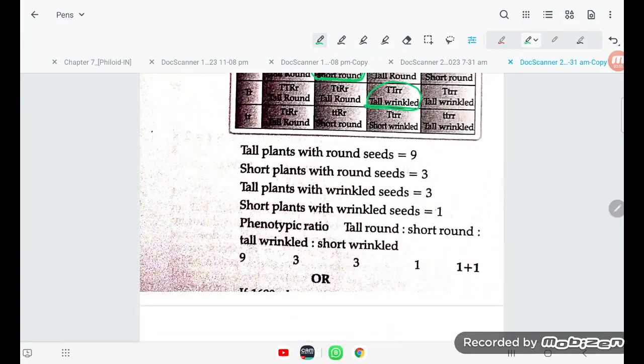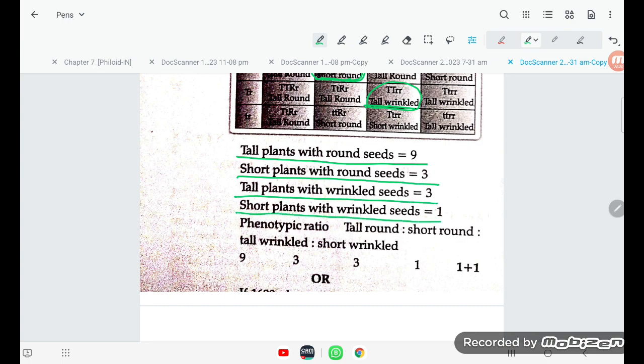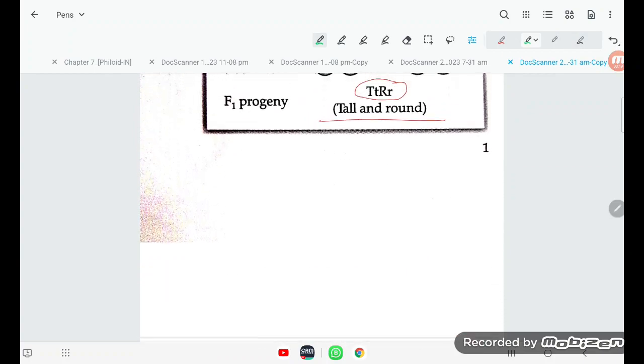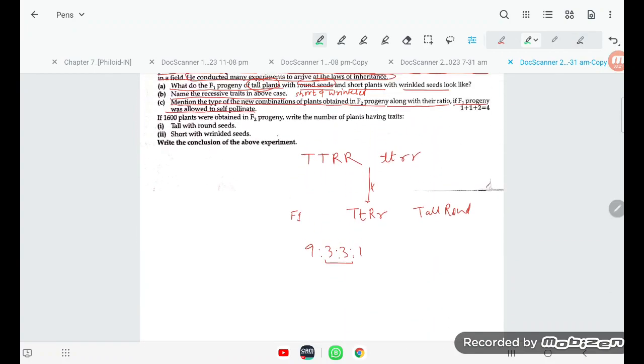So this is the answer: tall plant with round seed is 9, short plant with round seed is 3, tall plant with wrinkled seed is 3, short plant with wrinkled seed is 1. The phenotypic ratio of tall round to short round to tall wrinkled to short wrinkled is 9:3:3:1. Thank you for watching.